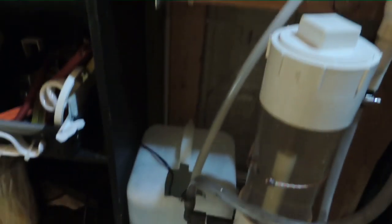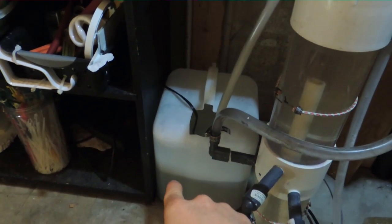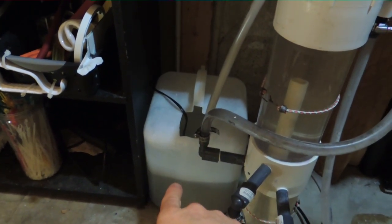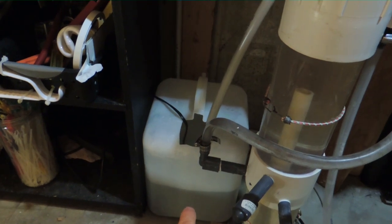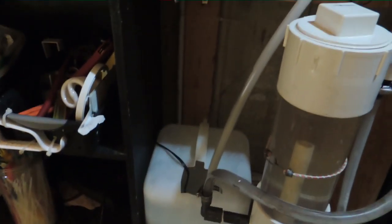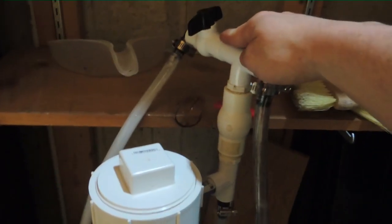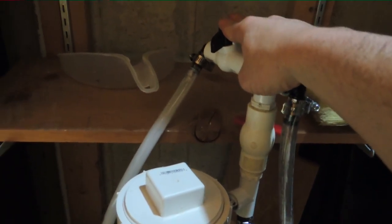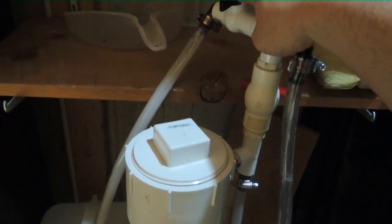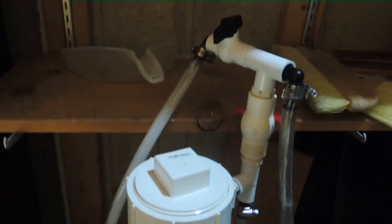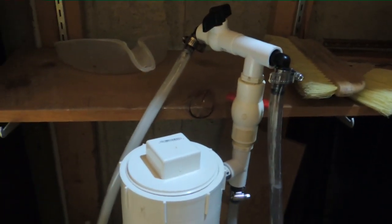But basically what's going on is I have water in my auto top off. So that's RODI and it pumps up to here. And then this valve slows it because it just runs a little too fast. So it limits the amount of water going into the calc reactor.